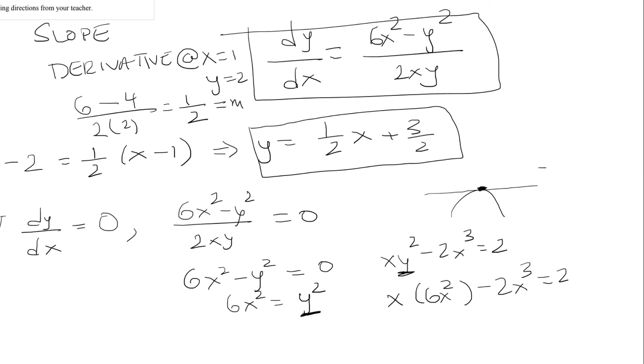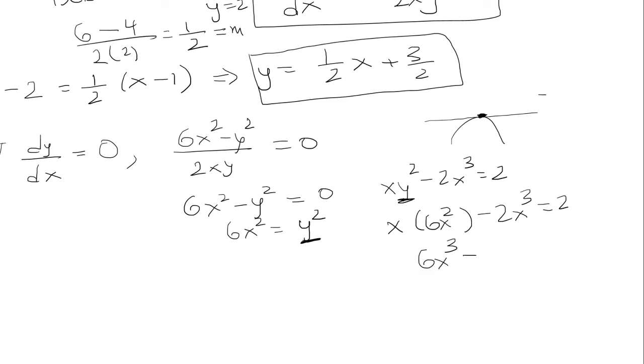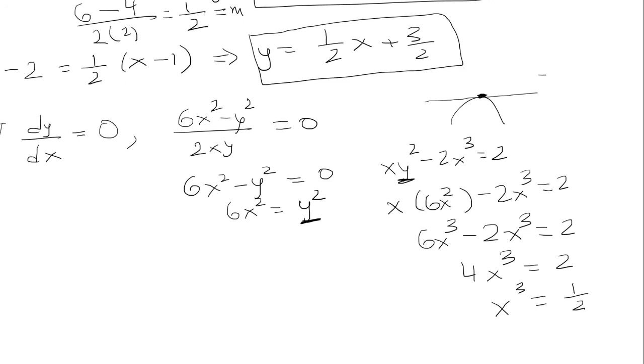So x times 6x² is 6x³ minus 2x³ equals 2. That will give us 4x³ = 2. x³ = 1/2. So take the cube root of both sides. We get x equals the cube root of 1/2. And this is our final answer.